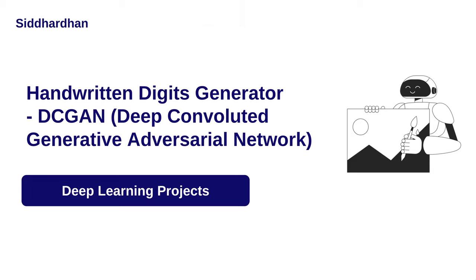Hello everyone, I am Siddhartham. This is the ninth project video in our deep learning course. In this video let's understand how we can build a handwritten digits generator using a deep convoluted generative adversarial network, commonly known as DCGAN. Before going into the coding aspects, first let's understand what is a GAN and what are all the building blocks of it.